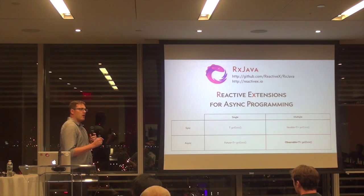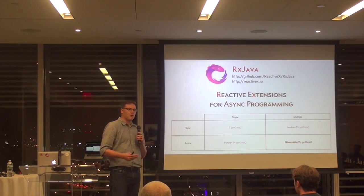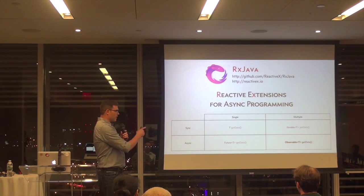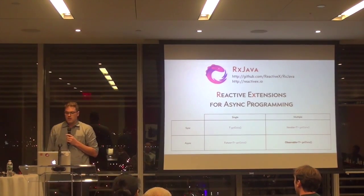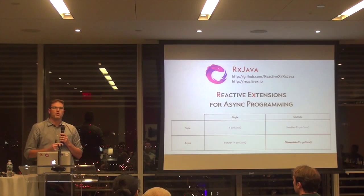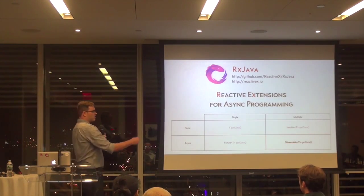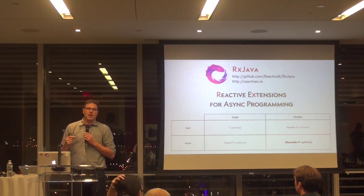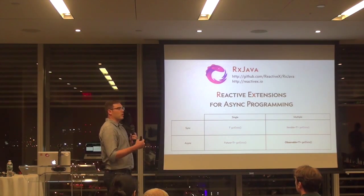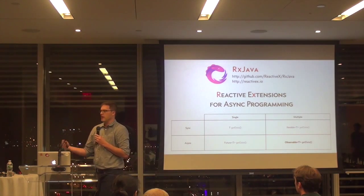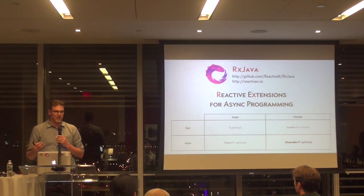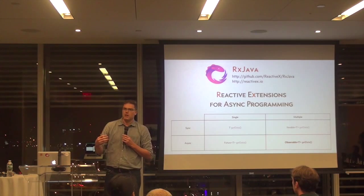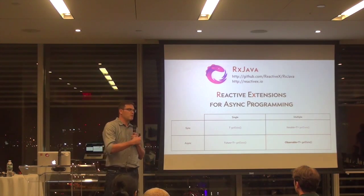If you were to put on a grid the different ways of dealing with data, I spent the first 10 to 15 years of my programming life predominantly on the top synchronous path — getting data in intervals, playing with futures. Learning about the Rx approach exposed me to the bottom quadrant: how do you deal with asynchronous streams of data where you're dealing with multiple values, potentially infinite amounts of data coming back?